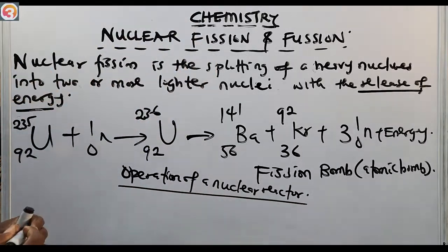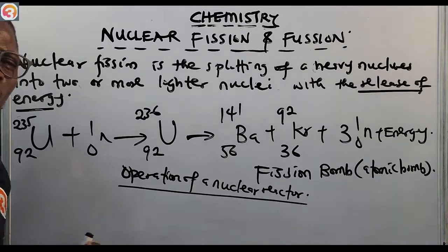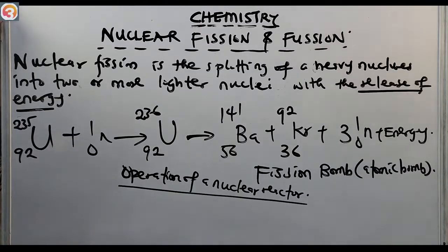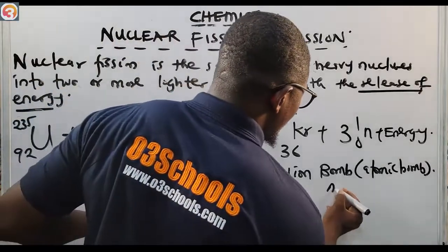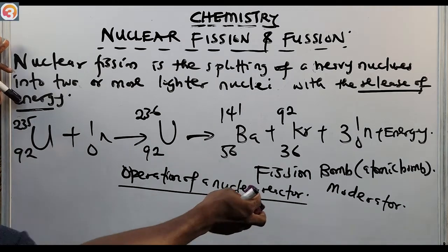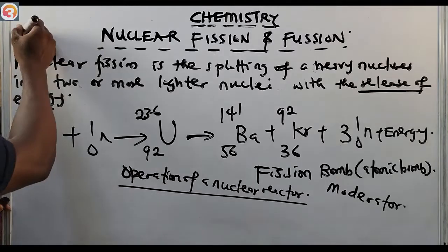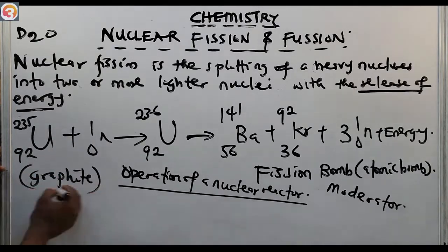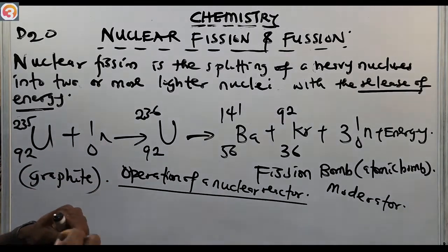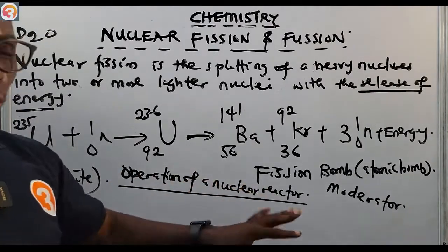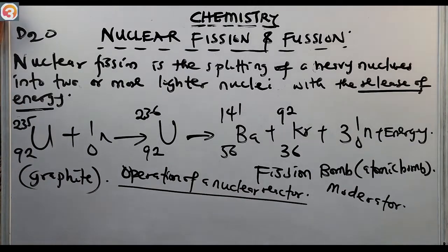In a nuclear reactor, there are some materials used to slow down the speed of neutrons. These are called moderators. Examples of moderators are D2O (heavy water, also called deuterium oxide) and graphite. They are used in a nuclear reactor to slow down the speed of neutrons.